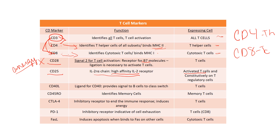The one caveat is T regulatory cells, which constitutively express CD25. This means they can constantly take up IL-2 from the surrounding area. A great way to stop T cells from responding to an antigen when you're ready to shut down an immune response — which is the main function of T regulatory cells — is to starve them. If you're a T regulatory cell and you want to stop all the T cells in the area from responding, you eat up all the food, they're starving, they can't proliferate.